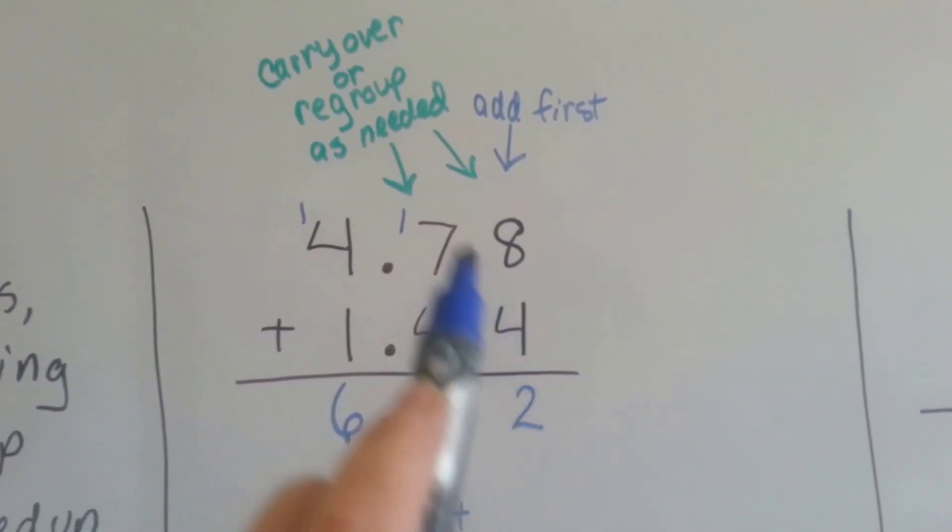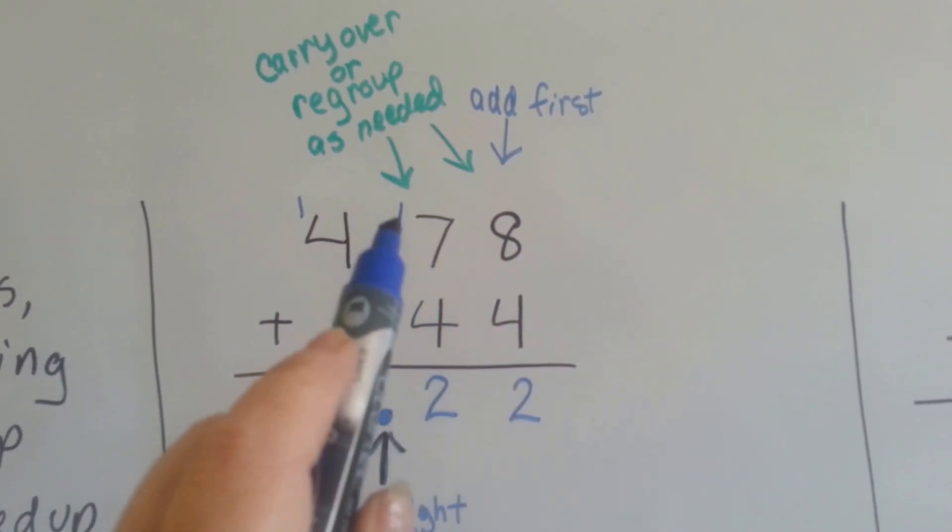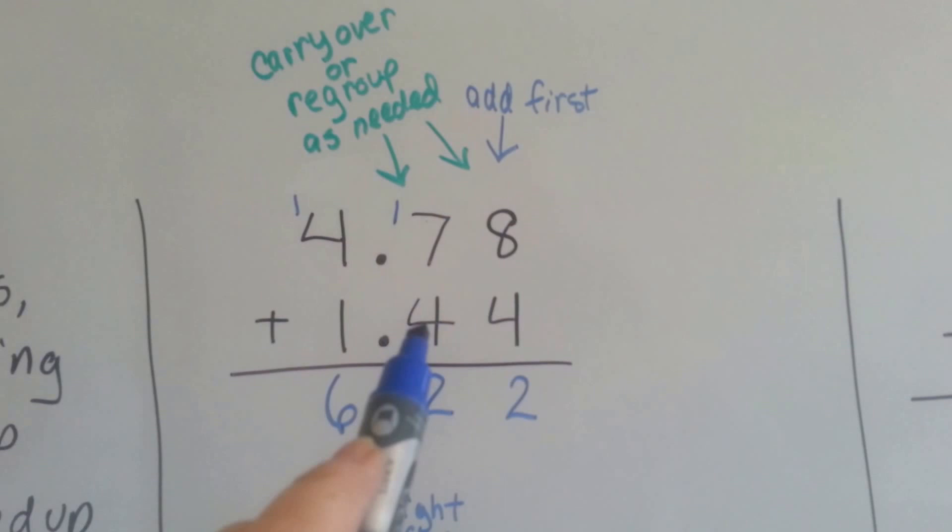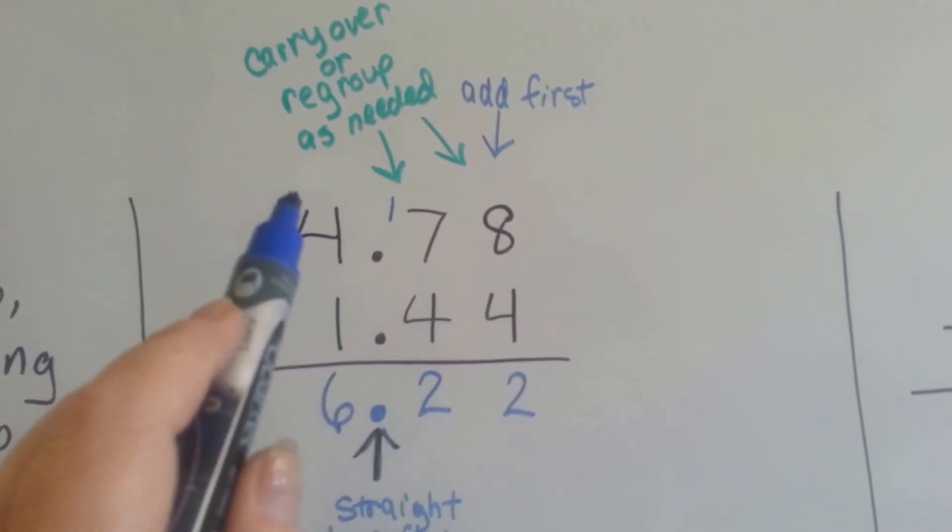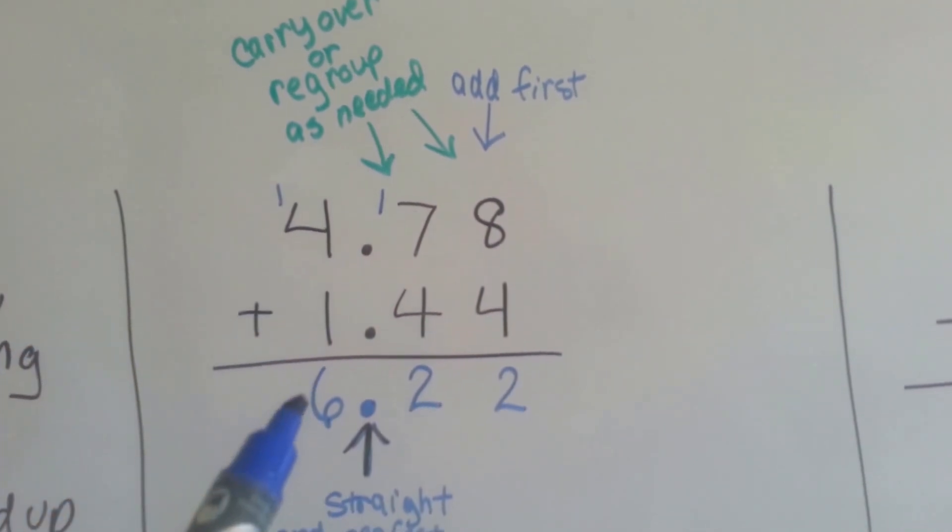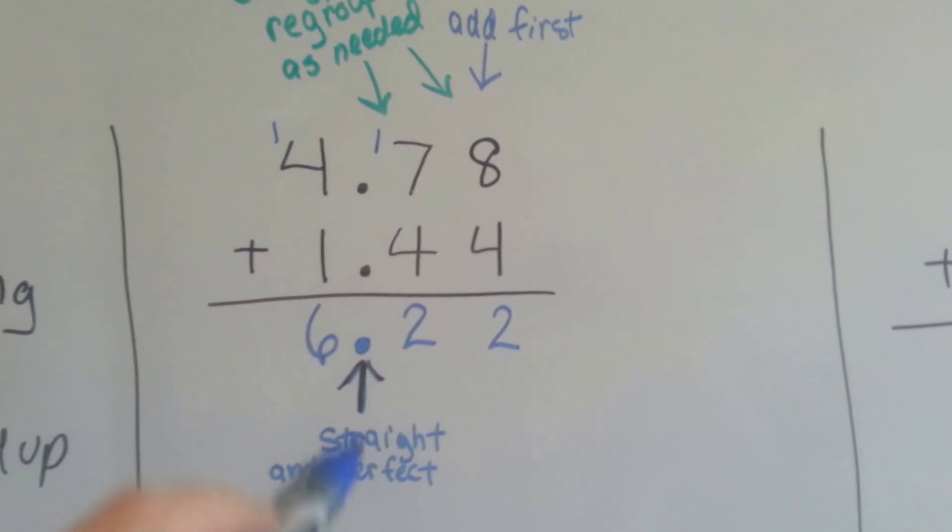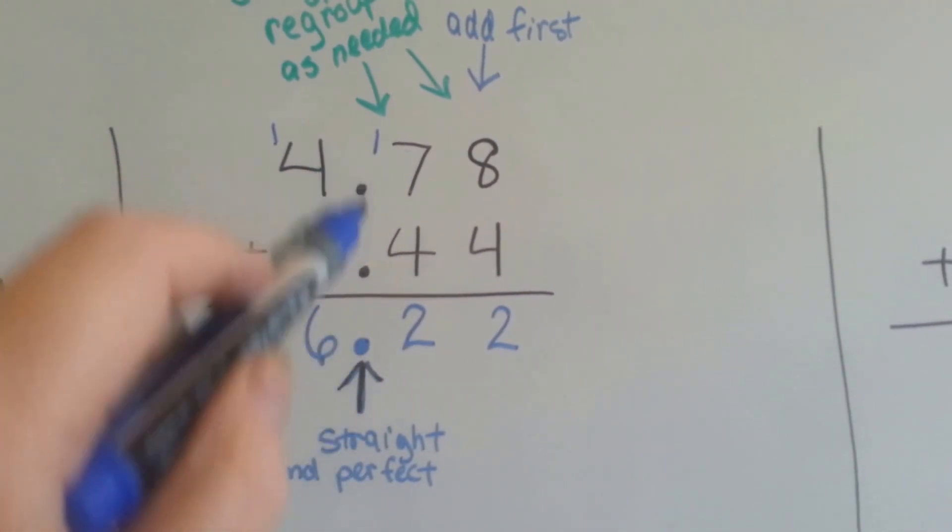8 plus 4 is 12. We carry the 1 and put the 2 down. 7 and 1 is 8 plus 4 is 12. We carry the 1 and put the 2 down. We add the 4 and the 1, which is 5, and 1 more is 6, and we have 6 and 22 hundredths. Our decimal points are all straight, perfect, and pretty.